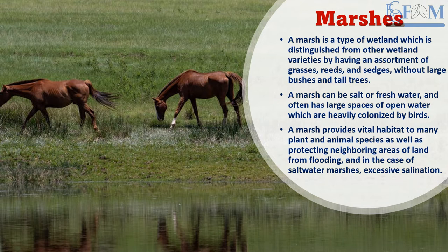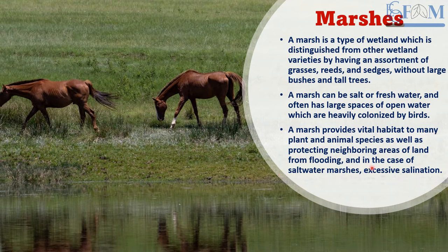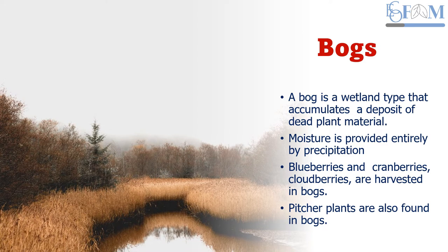Marshes are a type of wetland distinguished from other wetland varieties by having a mixture of grasses, reeds, and sedges without large bushes and tall trees. The biggest difference between marshes and swamps is that marshes have grasses as the dominant plant community, while in swamps it is woody plants. A marsh can be salt water or fresh water and often has large areas of open water heavily colonized by birds. Marshes provide vital habitat to many plants and animal species, as well as protecting neighboring land from flooding and, in salt water marshes, from excessive siltation.